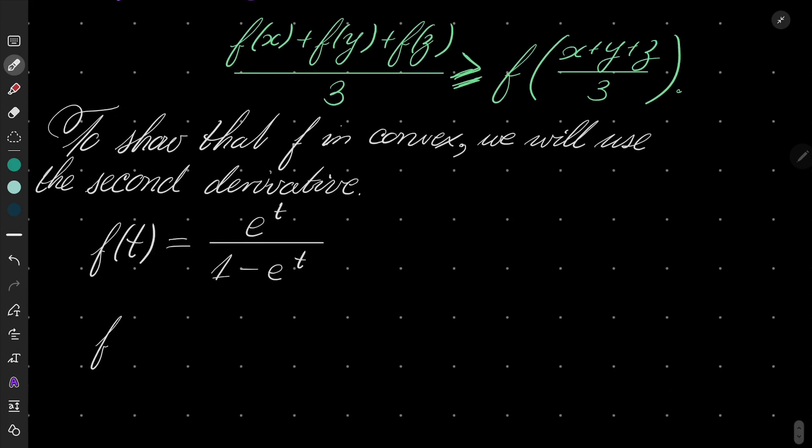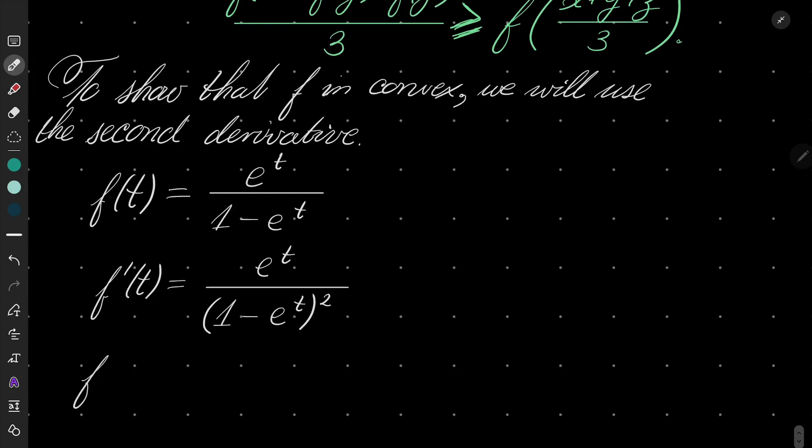The first derivative happens to be e to the power of t over 1 minus e to the power of t squared. And the second derivative will be e to the power of t plus e to the power of t over 1 minus e to the power of t cubed.